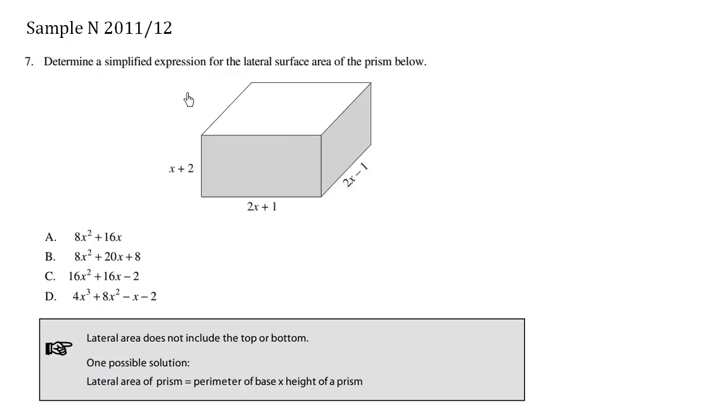Determine a simplified expression for the lateral surface area of the prism below. We have this tip here that lateral area does not include the top or bottom. We're only interested in the area of these sides, including the back there and the side here. So these four sides, what's the area added up?